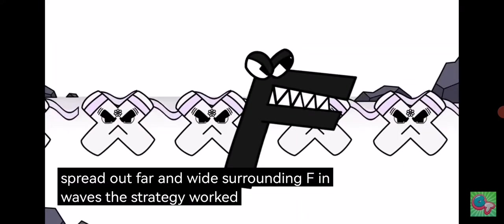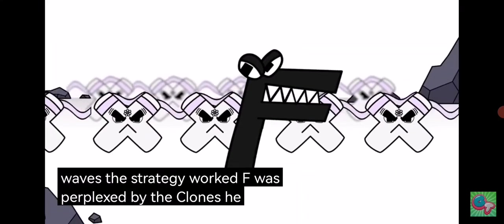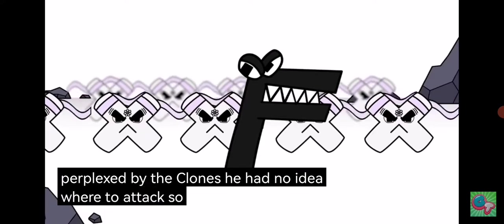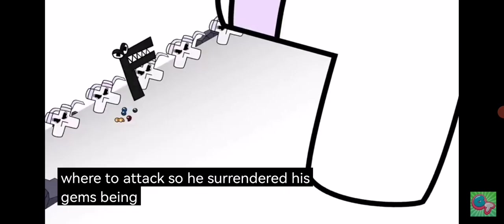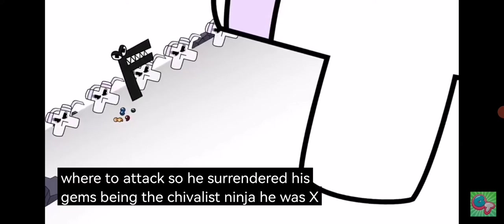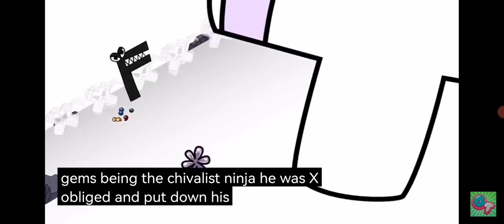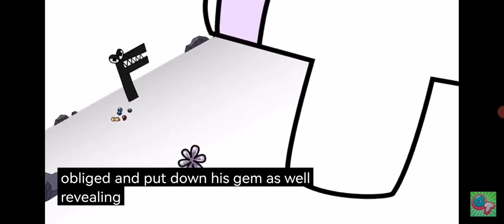The strategy worked. F was perplexed by the clones. He had no idea where to attack, so he surrendered his gems. Being the chivalrous ninja he was, X obliged and put down his gem as well, revealing the true X.